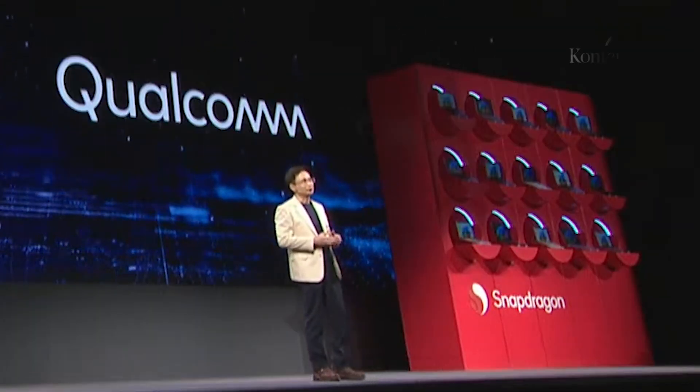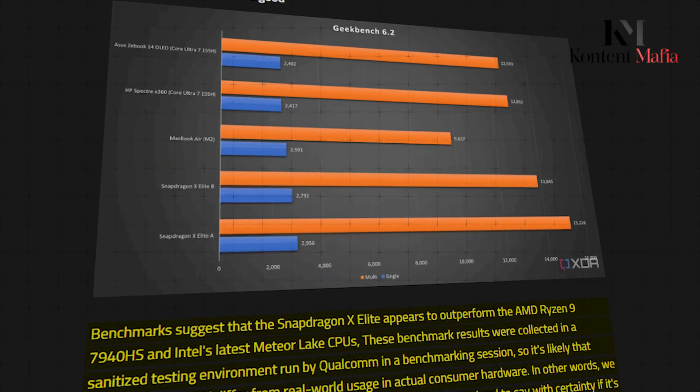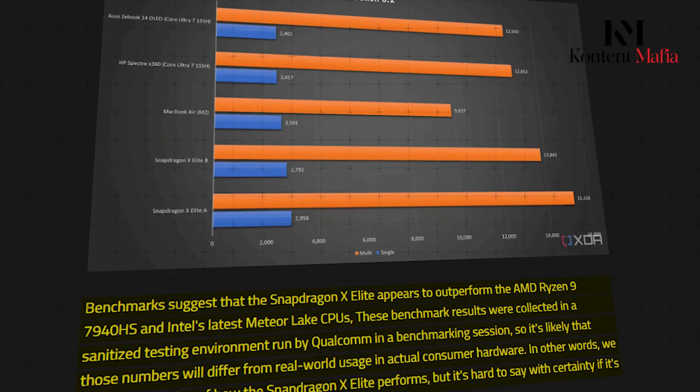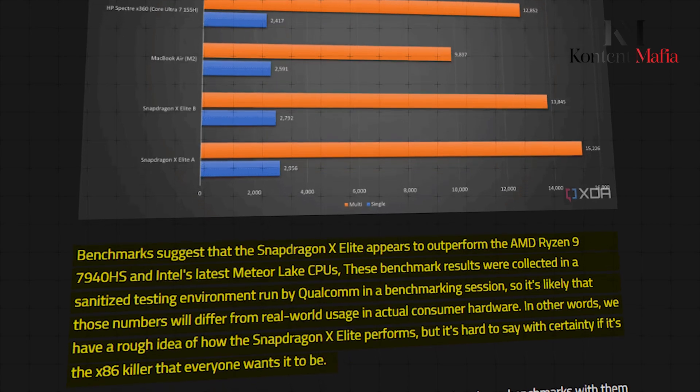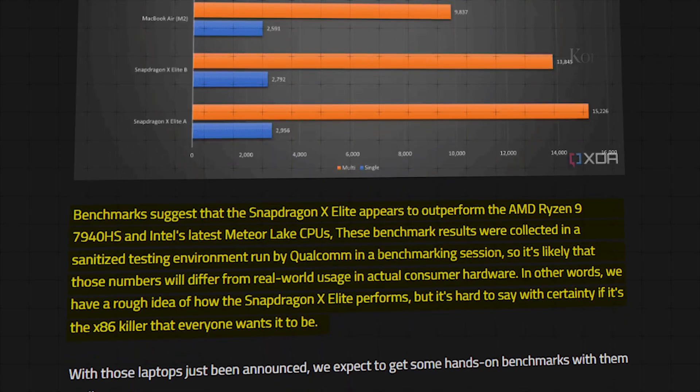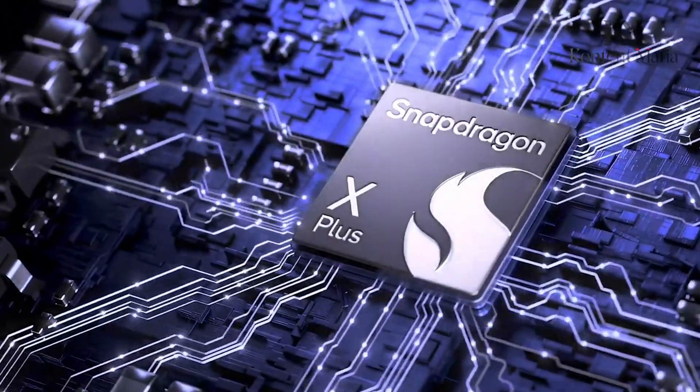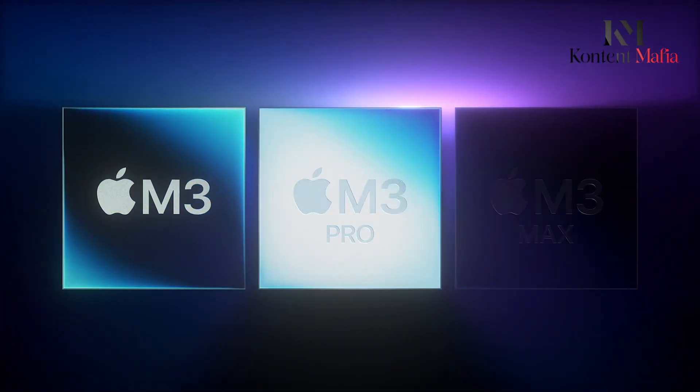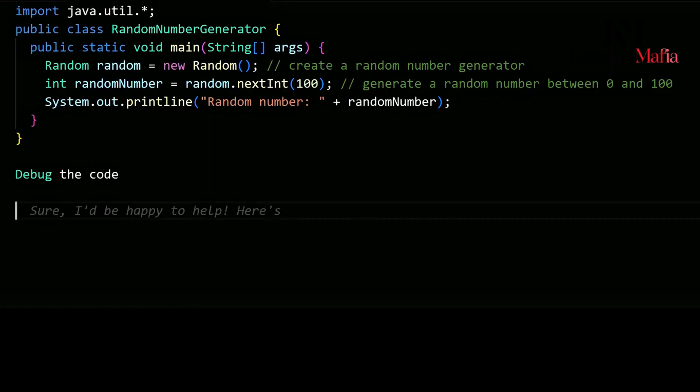Suppose Qualcomm's controlled benchmarks are to be believed. In that case, the Snapdragon X Elite chips have both Intel's latest Meteor Lake processors and AMD's Ryzen 9 7940HS squarely in their sights, outgunning them in both single-threaded and multi-threaded workloads. Even the mainstream X Plus is purported to beat Apple's vaunted M3 chip in multi-core performance while trading blows in single-thread tasks.